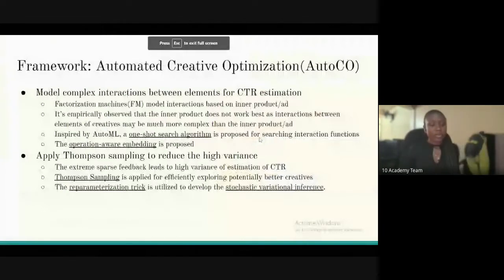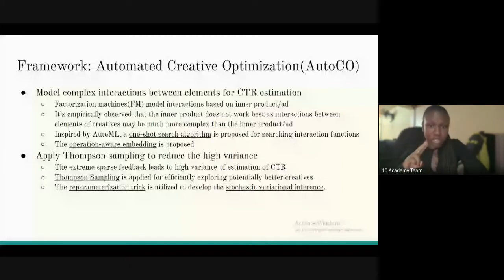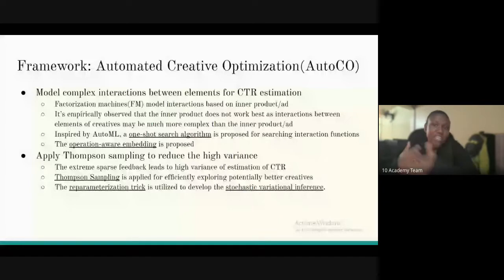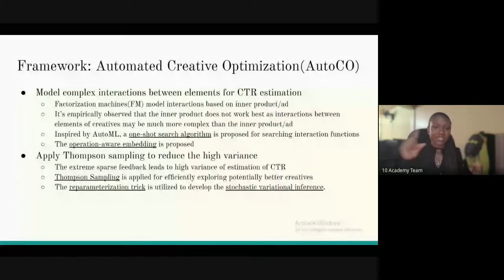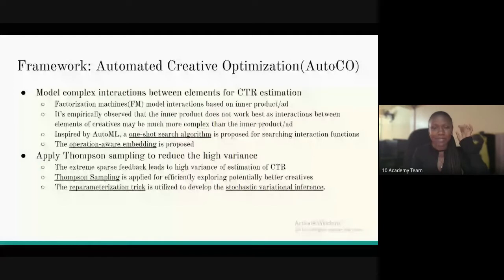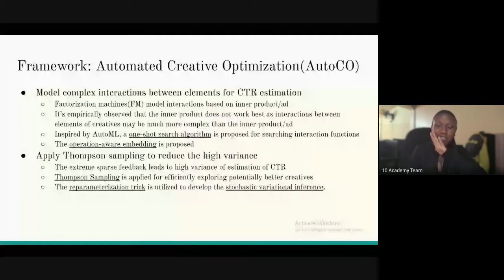When discussing the issues with showing creative ads, we had two main issues. First: which elements and which features will produce the best interaction to get the highest click-through rates? Second: high variance — because you overfit your data by going through everything, you end up with something like a 100% click-through rate, which in machine learning is a sign of overfitting. A 100% CTR is not a good sign — something is wrong.